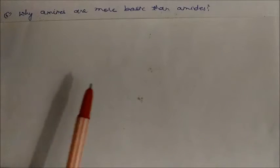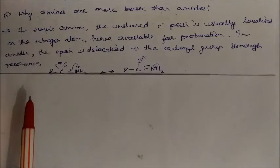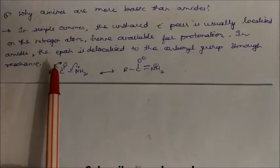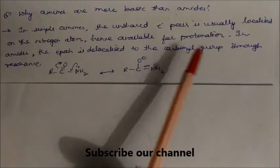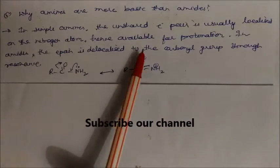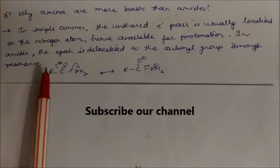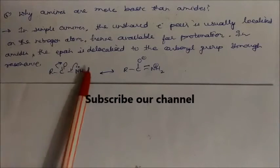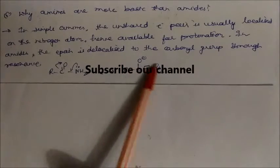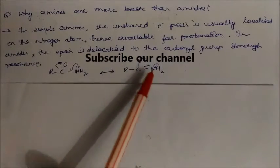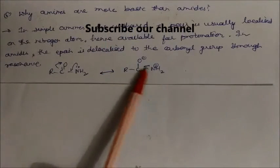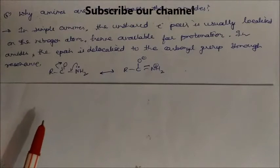Why are amines more basic than amides? In simple amines, the lone electron pair is localized on the nitrogen atom and hence available for protonation. But in amides, the electron pair is delocalized to the carbonyl group through resonance — as seen in the RCONH₂ structure — making amides less basic due to this delocalization of the electron pair on nitrogen.